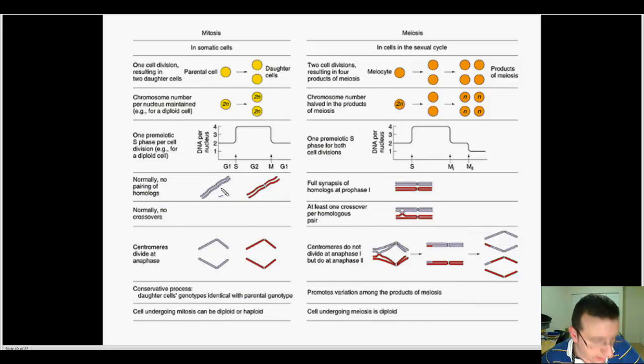There is no pairing of homologues in mitosis, but there's pairing of homologues across synapses in meiosis. There is no crossing over in mitosis, which means no recombination, but there is recombination and crossing over during meiosis.